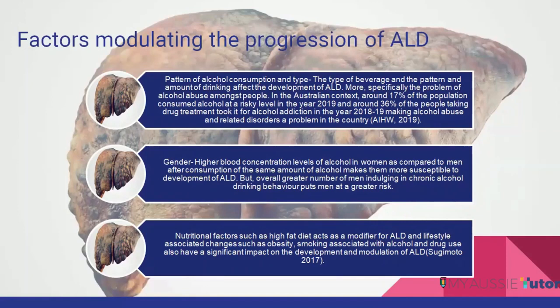Nutritional factors such as a high-fat diet act as a modifier for ALD. Lifestyle-associated factors such as obesity, smoking, and drug use also have a significant impact on the development and progression of ALD. Eating a high-fat diet and having high cholesterol, combined with obesity and smoking, are all high-risk factors for the progression of fatty liver to ALD and cirrhosis.